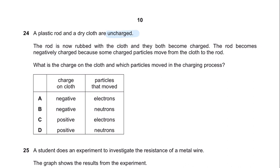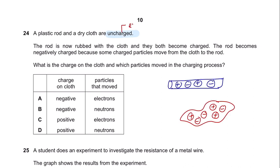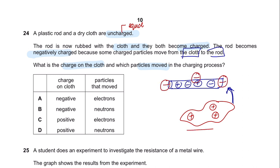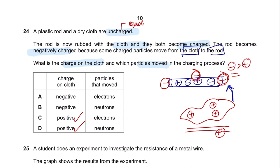Question 24. A plastic rod and a dry cloth are uncharged—uncharged means equal positive and negative charges. The rod is rubbed with the cloth and they both become charged. The rod becomes negatively charged because some charged particles move from the cloth to the rod. Only negative particles—electrons—can move. The electrons from the cloth have been transferred into the rod, so the cloth is now positively charged. The charge on the cloth is positive and the particles that moved are electrons. The answer is C.